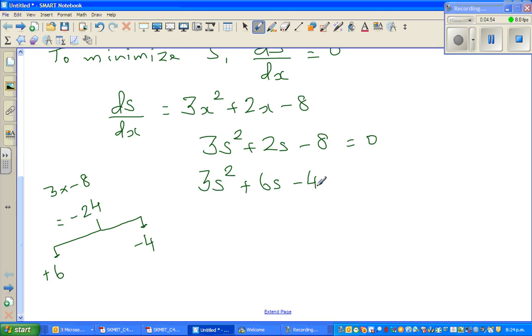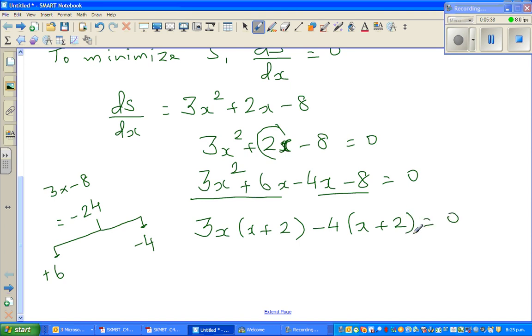So I'm going to split this as 3x squared plus 6x minus 4x minus 8 is equal to zero. What I've done is this 2x I have written as 6x minus 4x. Now you can factor out 3x here, so you have x plus 2, and you can factor out negative 4 here, so you will again have x plus 2. So this is (x + 2)(3x - 4) = 0.